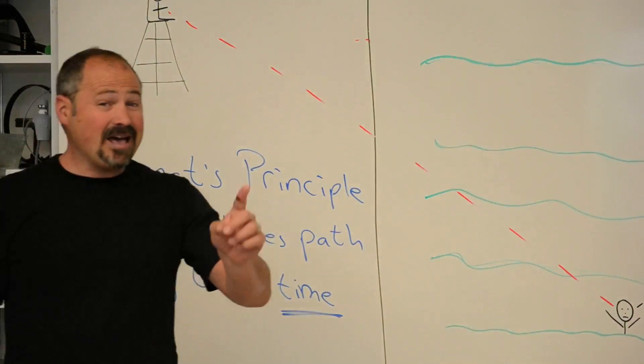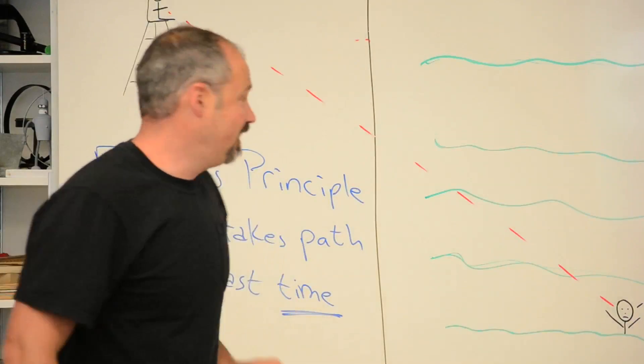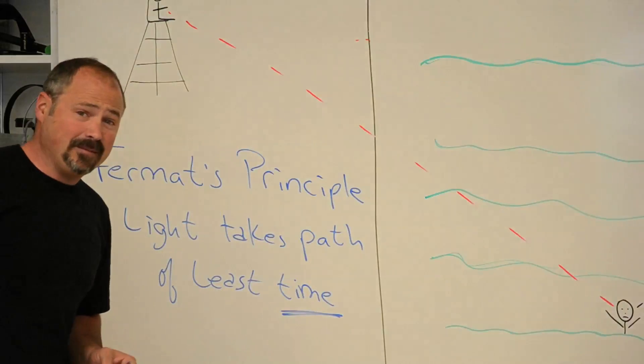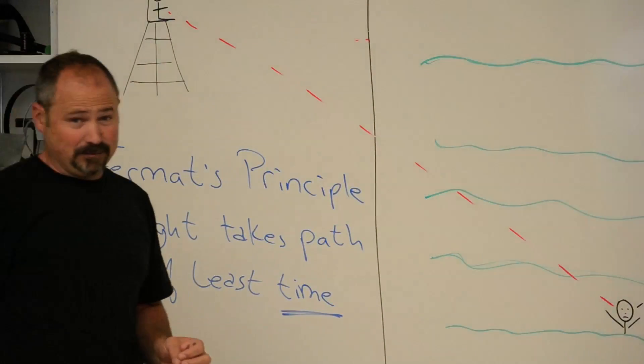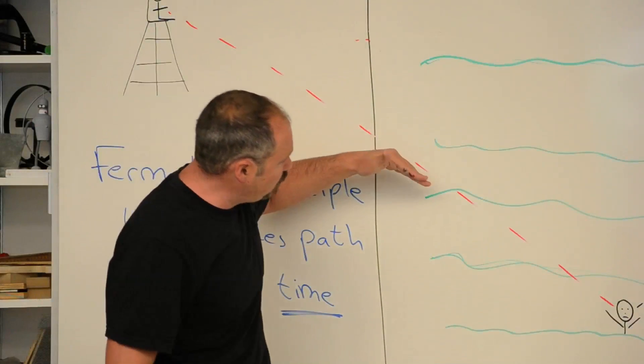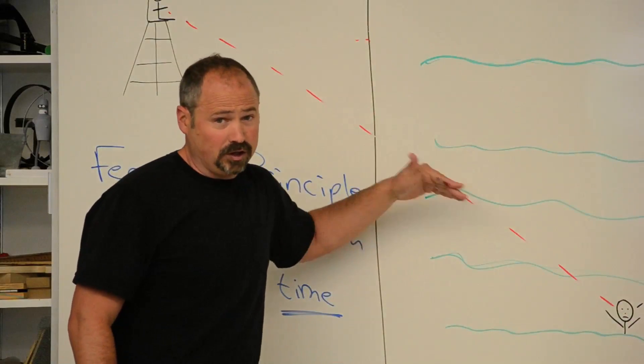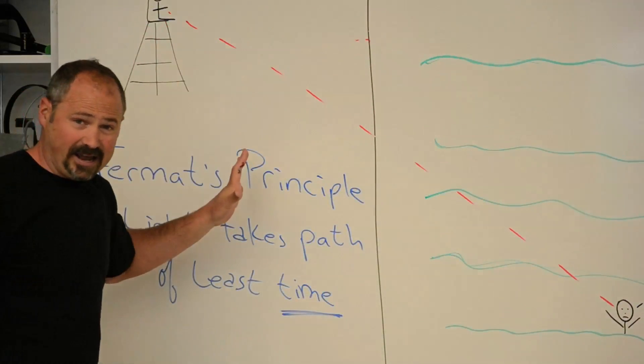But that's the path of least distance, not the path of least time. And the reason it's not the path of least time is because you swim much more slowly in water than you run on land.